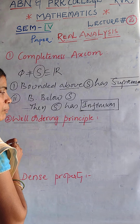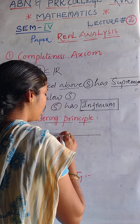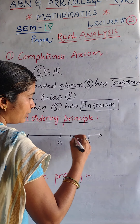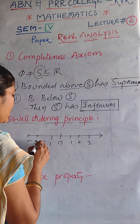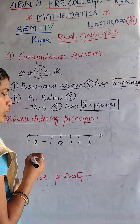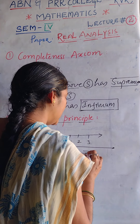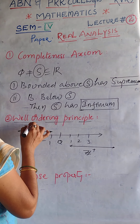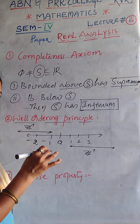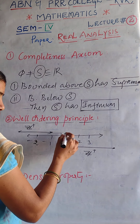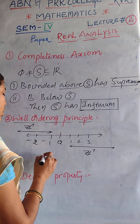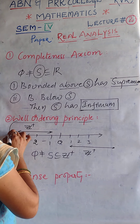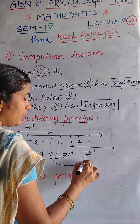What is the well-ordering principle? Any non-empty set of positive integers. If we classify integers — suppose we take a real line — on the right side we take positive numbers, on the left side negative numbers, and the middle element is 0. The right side elements starting from 1 are called positive integers, the left side of 0 are called negative integers, and including 0 on the right side are called non-negative integers.